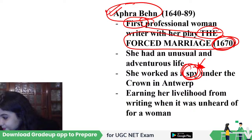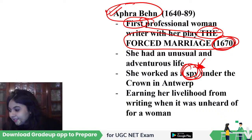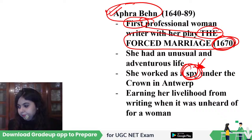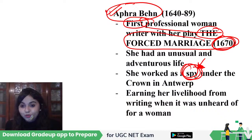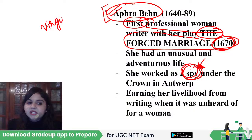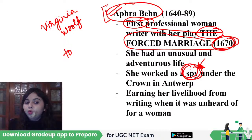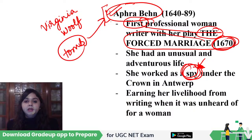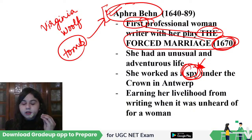Aphra Behn is one of the first few writers — so much so that Virginia Woolf praised her and said we must all pay our respects on the tomb of Aphra Behn, because it is people like her who contributed to the emancipation of women — women were now considered individuals and not just commodities to be traded. Virginia Woolf says that because of people like Aphra Behn, we as women in the 20th century can voice our opinions and inform others about what we are feeling.